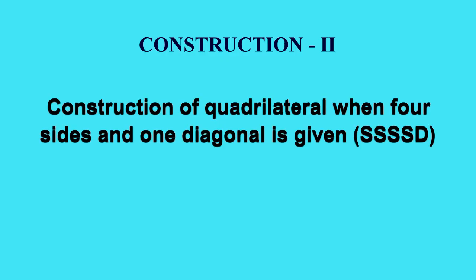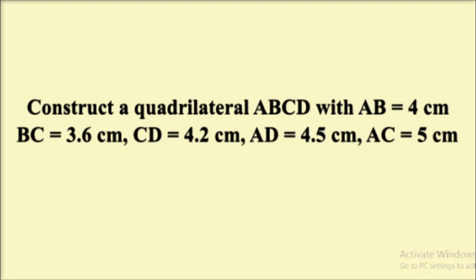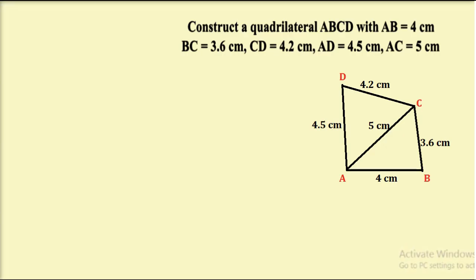Let us move on to our next construction: construction of a quadrilateral when 4 sides and 1 diagonal are given. Let us take an example — construct a quadrilateral ABCD with AB equal to 4 cm, BC equal to 3.6 cm, CD equal to 4.2 cm, AD equal to 4.5 cm, and diagonal AC equal to 5 cm. First, we draw a rough figure of this construction.